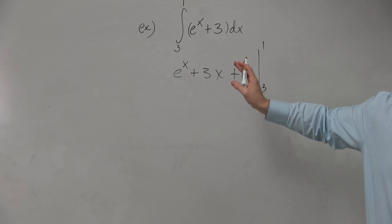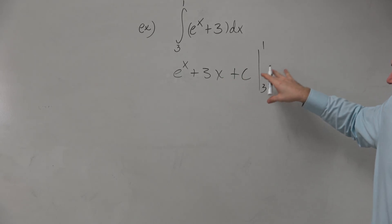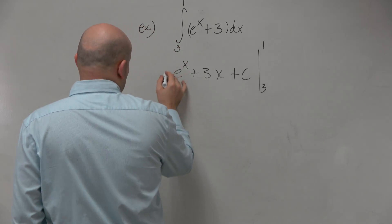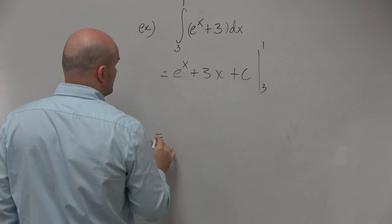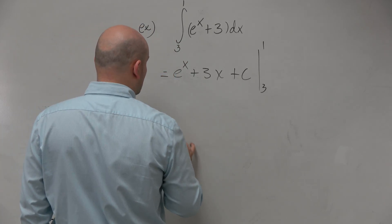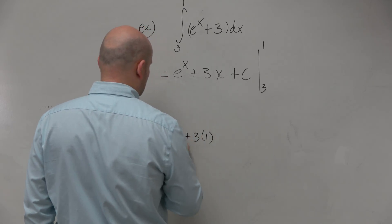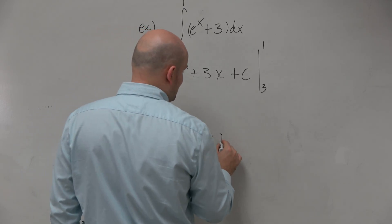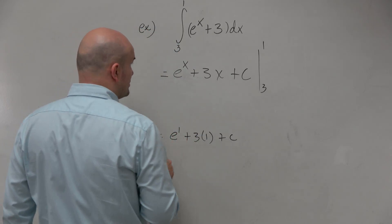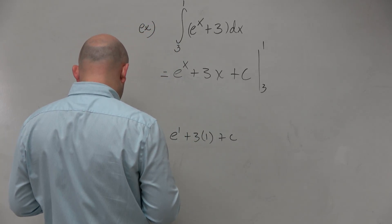This is the only time I'm going to show the C, but I want to show it again for the reason. So this then equals e to the 1 plus 3 times 1. Now, parentheses here is huge — huge.